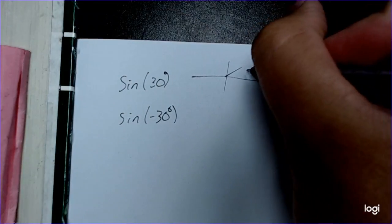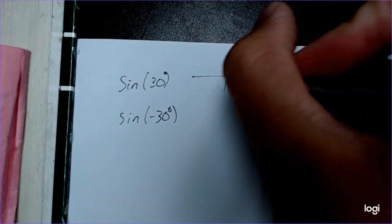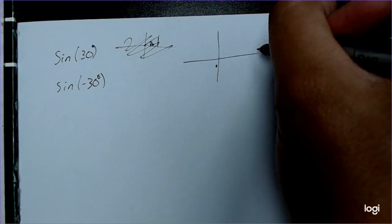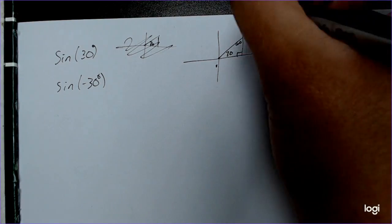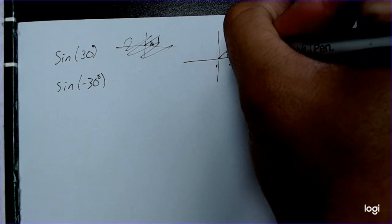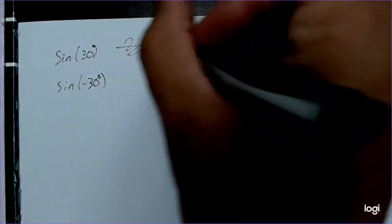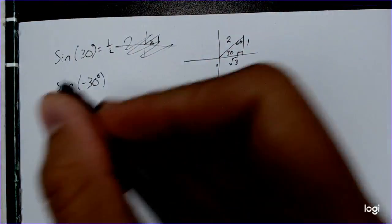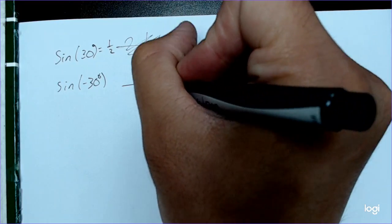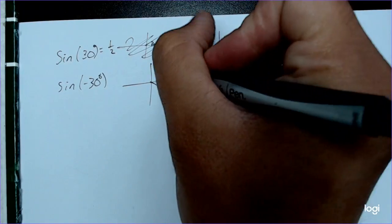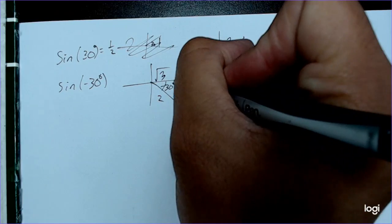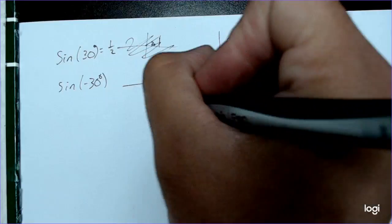If I do sine of 30 degrees, I draw a reference triangle on the unit circle. That's 30 degrees, 60 degrees, 90 degrees. The sides are 1, root 3, and hypotenuse 2. Sine is opposite over hypotenuse, so sine of 30 equals positive one-half. Now let's do the sine of negative 30. Negative 30 degrees goes into the fourth quadrant, giving us sides 1, root 3, 2. Sine is opposite over hypotenuse, which is one-half.